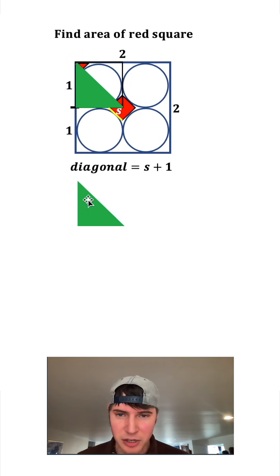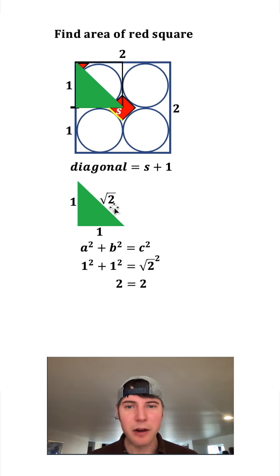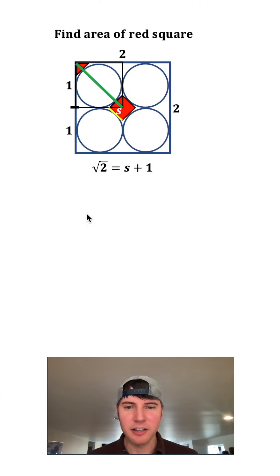But we can pull out of this a triangle, and this green triangle here is the same thing as this green triangle here. Both of these sides are equal to one. Anytime you have a right triangle where the two legs are equal to one, the hypotenuse is always equal to square root of two. And if you want to verify it, here it is using Pythagorean theorem. So now we can plug in square root of two for the diagonal.